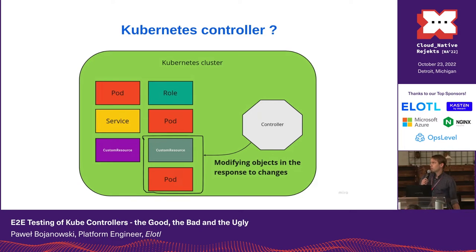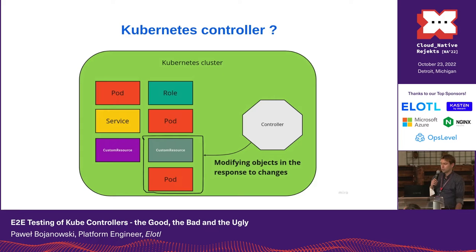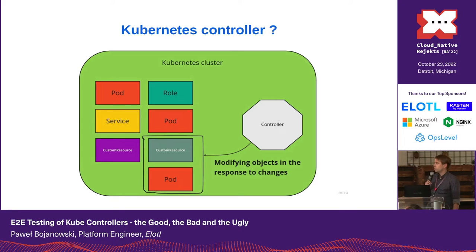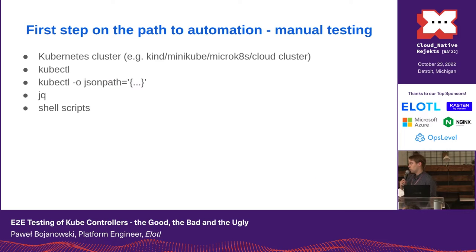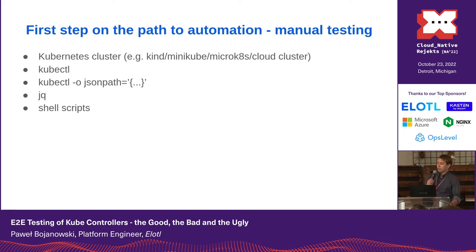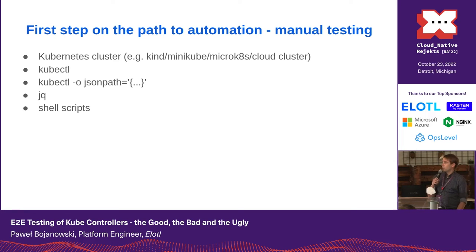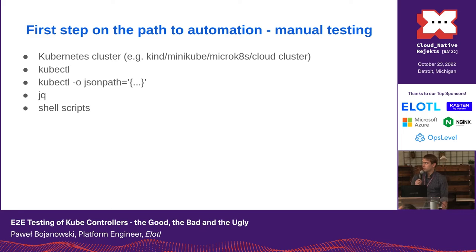So the question is how to test it end-to-end. Obviously you will need a cluster and you will need to deploy your controller. Usually the way that good end-to-end tests are born, the first step is manual testing. You get a cluster, you get kubectl, you apply some change in the cluster with kubectl, wait for your controller to respond to that change, and try to do some kind of assertion — also using kubectl, probably getting objects in JSON format, maybe some parsing or whatever.